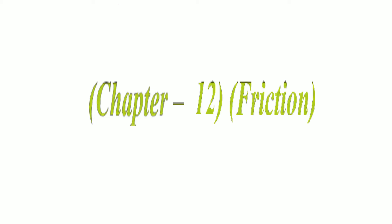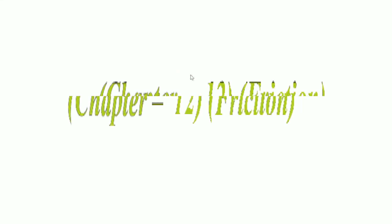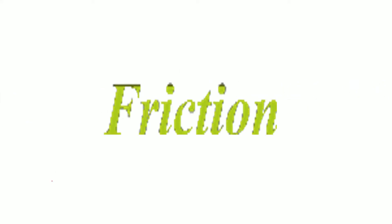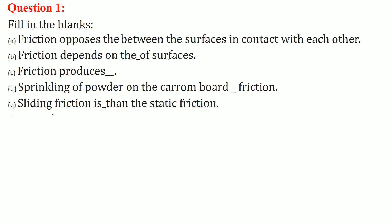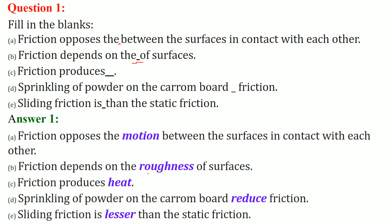We are discussing Chapter 12, which is Friction. We are taking question answers of friction. First, fill in the blanks: friction opposes the dash between the surfaces in contact — the answer is motion. Friction depends on the dash of these surfaces — the answer is roughness. Friction produces dash — the answer is heat.